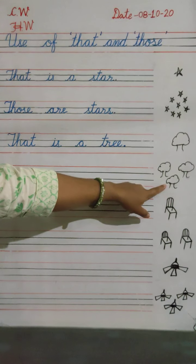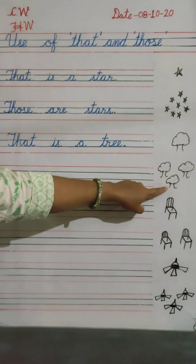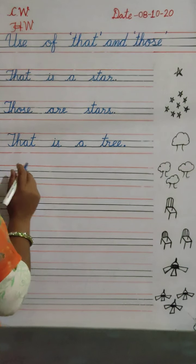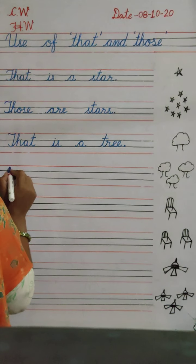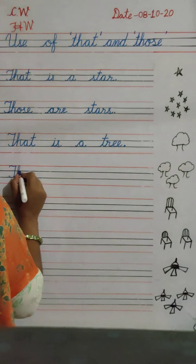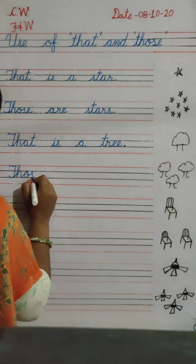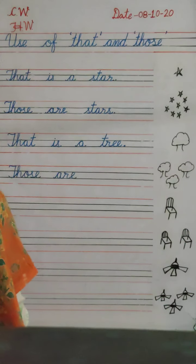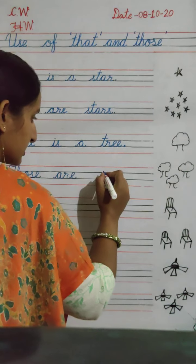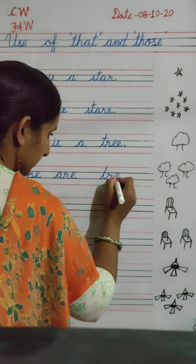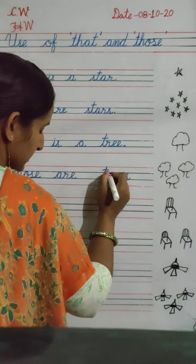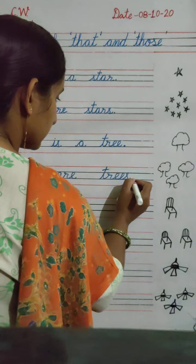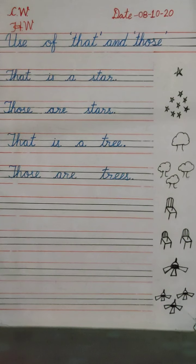Now look there — there are many trees, three trees. Three trees count as many, so what will you write? We will use 'those' for many. T-H-O-S-E. Those are trees. T-R-double E-S — trees. Because there are many trees, you will add S to the spelling of 'tree'. Full stop.